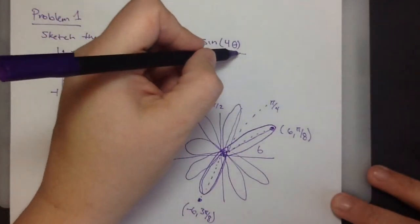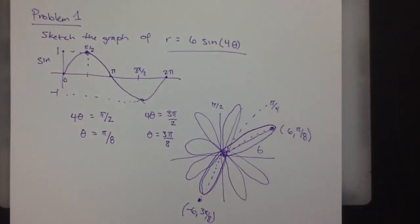So, that's what the graph of 6 sine of 4 theta looks like. This is problem 1.